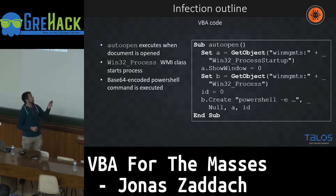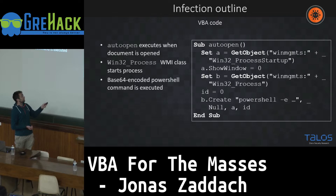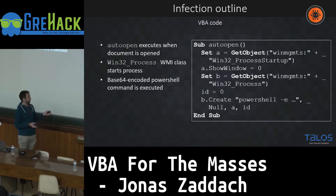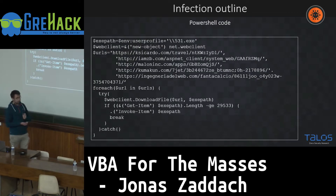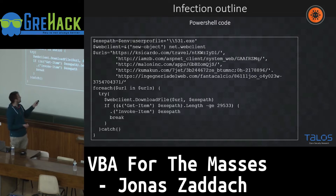Then — this is a bit tricky with macros — the code gets an instance of the Win32_Process Windows Management Interface class. With this instance it can open a process, and as an additional feature it hides the window of this process so you don't see it started in the background. Then it creates a process that is PowerShell with something encoded as a base64 blob. The PowerShell code is executed, cycling through a couple of URLs, trying to download an executable. If downloaded successfully, it's invoked.